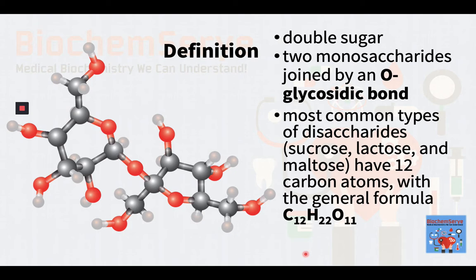The most common types of disaccharides — namely sucrose, lactose, and maltose — all have 12 carbon atoms, with the general formula C12H22O11. The differences in these disaccharides are due to atomic arrangements within the molecule.